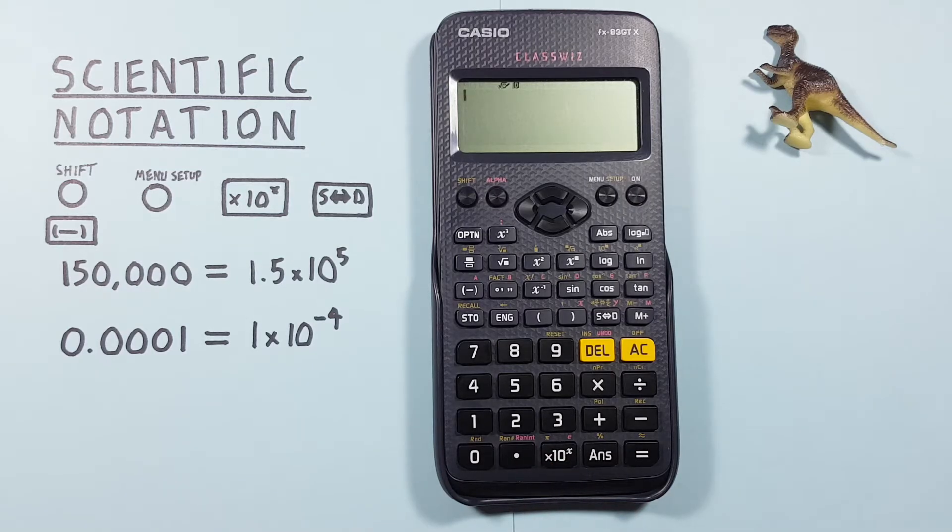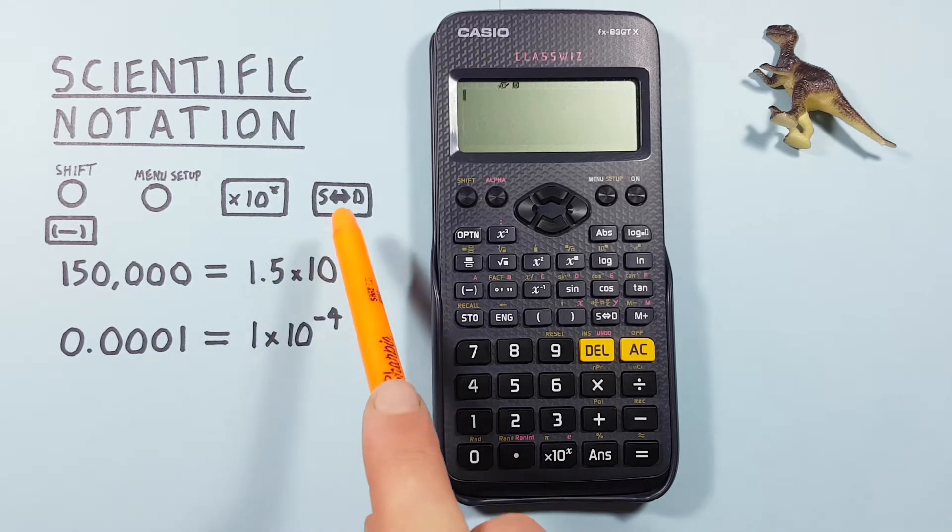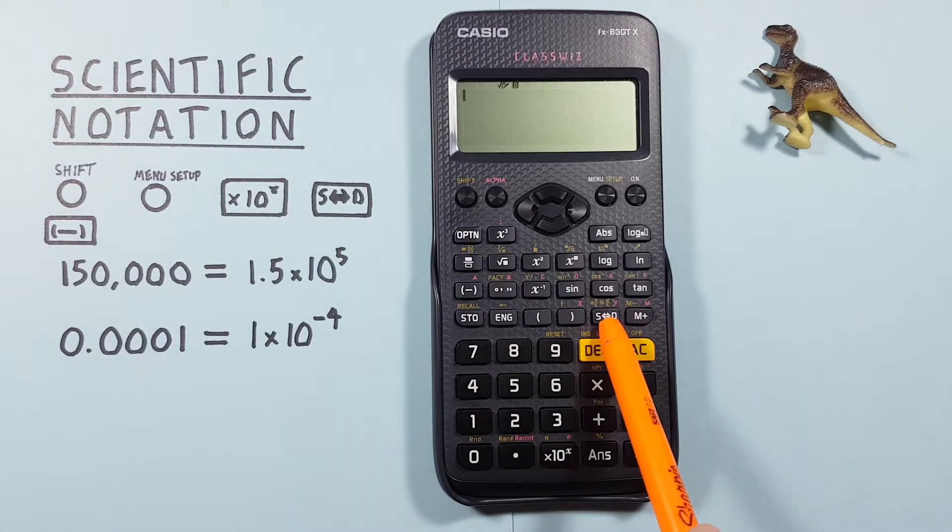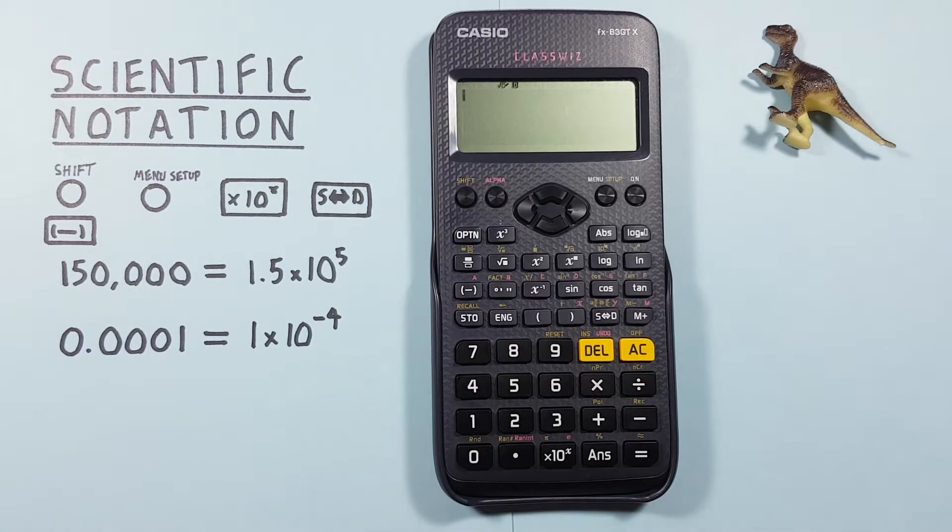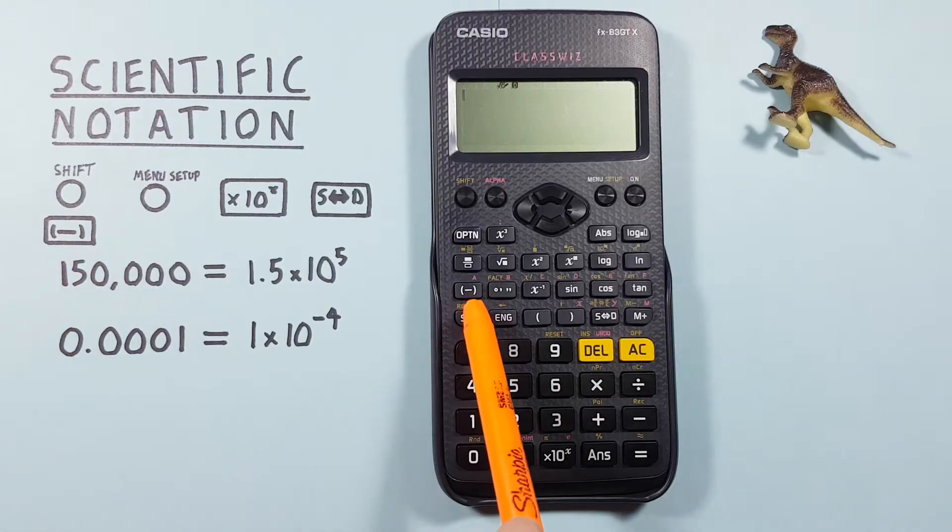We'll also use the S to D key or conversion key located here, and the negative key located here.